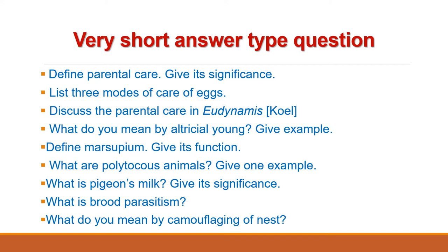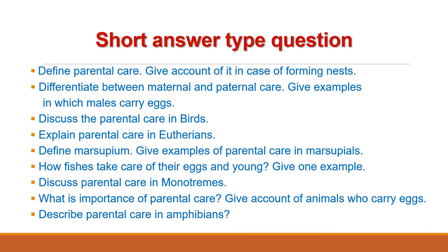Next: Define marsupium and give its function. Next: What are polytokous animals? Give one example. Next: What is pigeon's milk? Give its significance. Next: What is brood parasitism? And the last question from this category: What do you mean by camouflaging of nest?